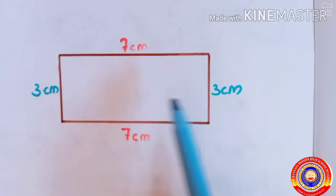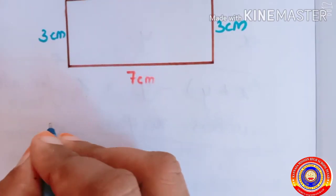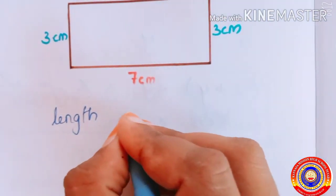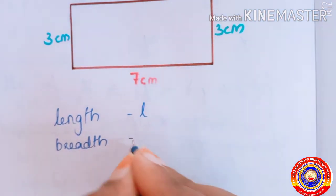For a rectangle, the opposite sides are equal. If we denote the length of each side as L and breadth as B...